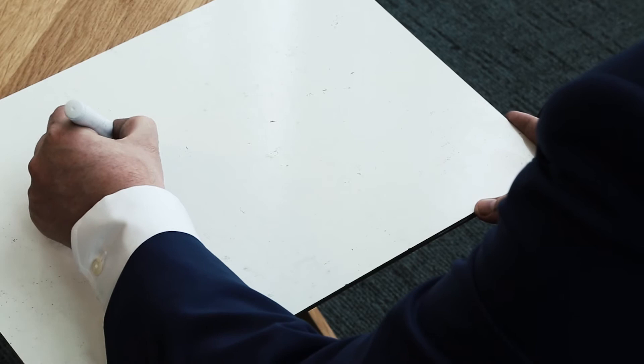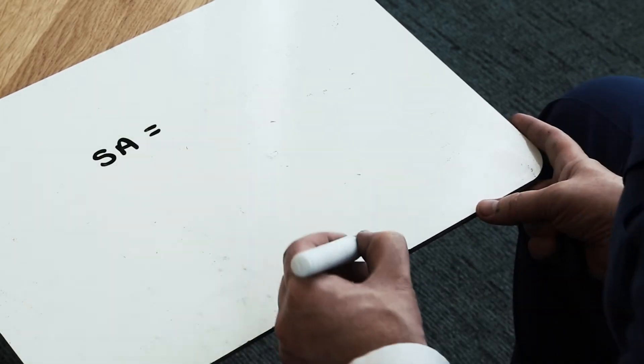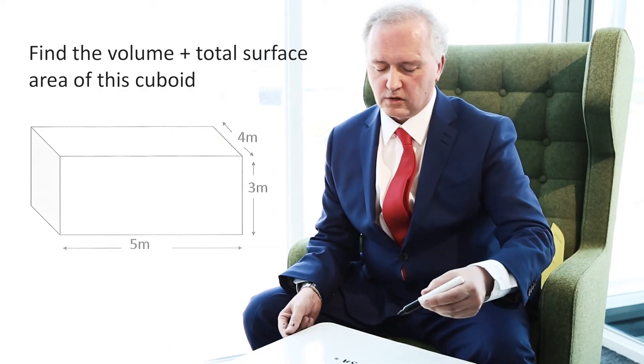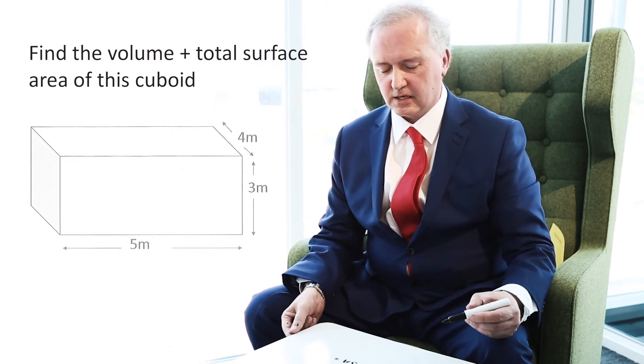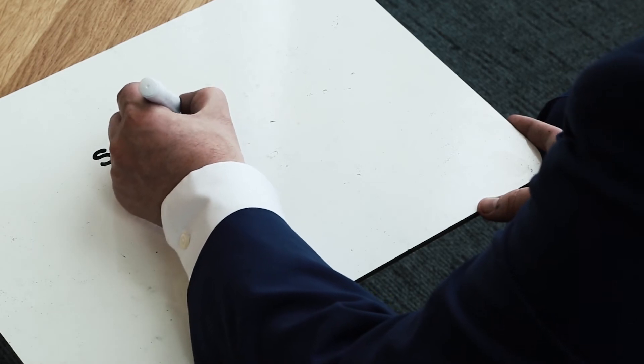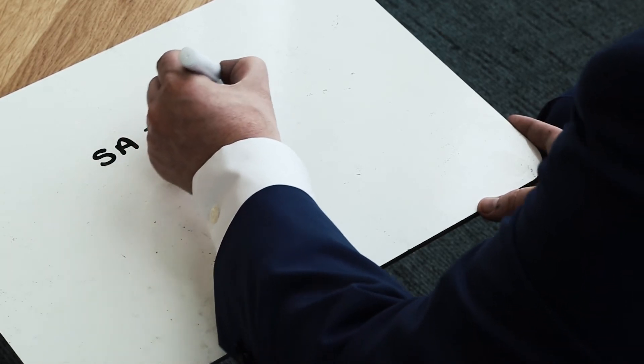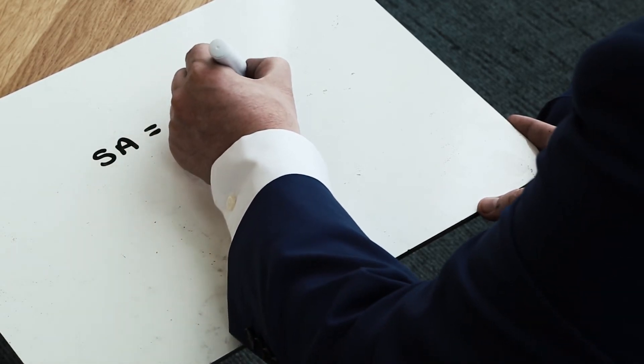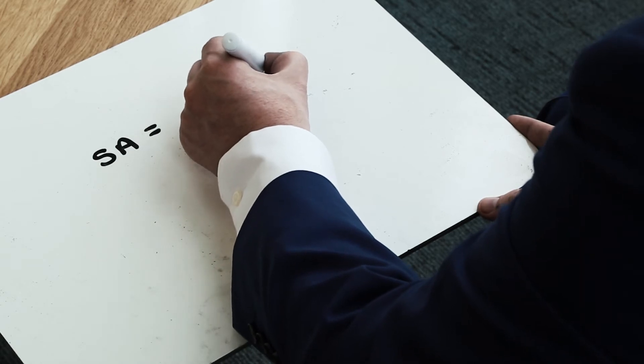So what I can actually do here in a nice calm considered way is to say that my surface area is equal to, well I've got a 5 metre by 3 metre face here but there's actually two of those because I've got one on the front and one on the back. So I'm actually going to write two times, I'm going to open up some brackets here and I'm going to put 5 times 3.